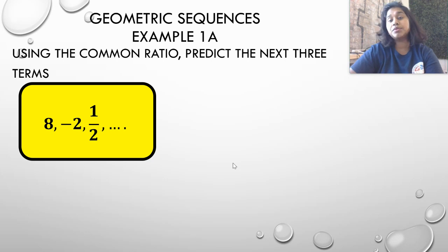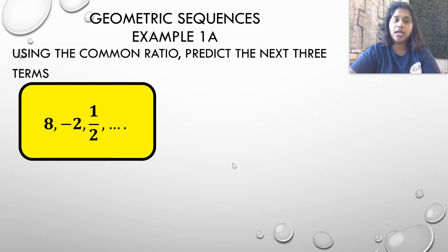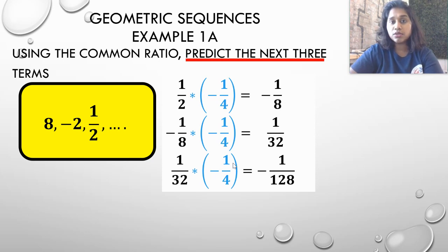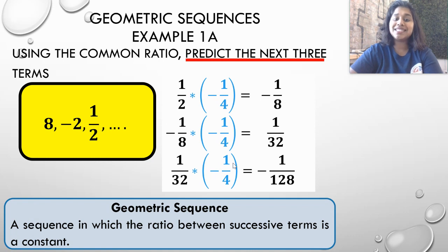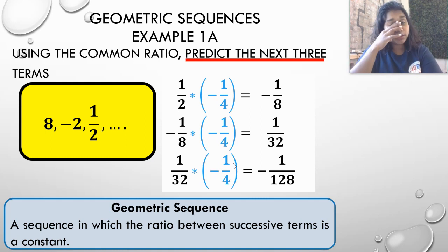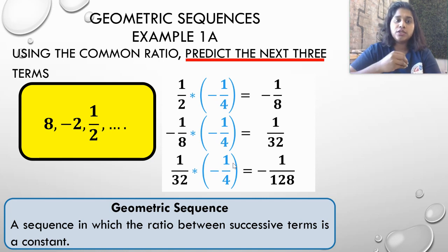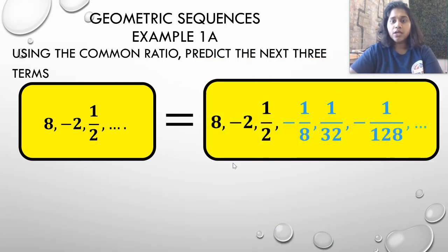Using our common ratio of negative one-fourth, let's predict the next three terms. This time we multiply instead of divide. One-half times negative one-fourth is negative one-eighth. Negative one-eighth times negative one-fourth is positive one thirty-second. One thirty-second times negative one-fourth is negative one twenty-eighth. With arithmetic sequences we had a common addition or subtraction; with geometric sequences we have a common multiplication. When predicting terms, use multiplication; when finding the common ratio, use division.